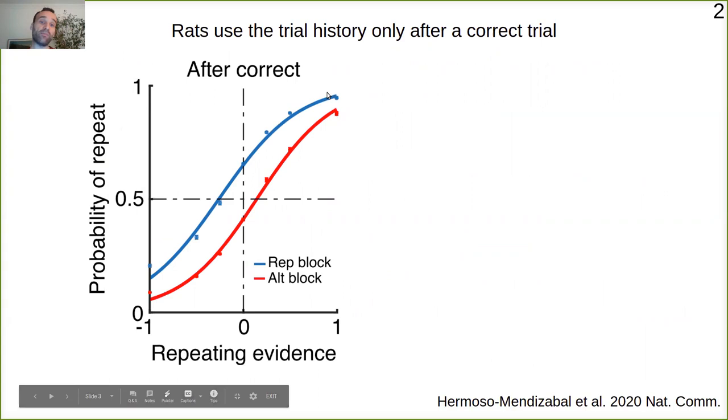You can see that in the repetitive block this curve is shifted towards the left, which means that rats tend to repeat more often than chance, and in the alternating block the opposite is true.